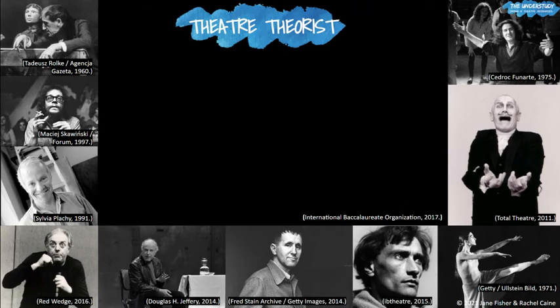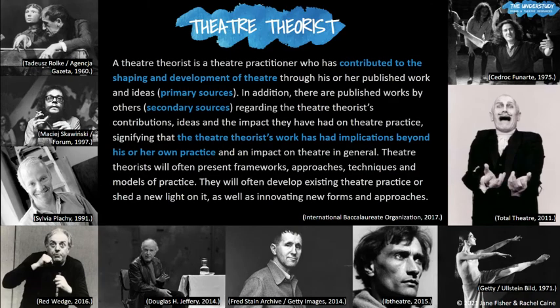Part A asks you to choose a theatre theorist. I have some images on the screen of different theorists — this is not exhaustive, there are many more. A theatre theorist is basically a theatre practitioner who has contributed to shaping and developing theatre either through their published work and ideas, which we call primary sources, or through secondary works published by others about their theories and impact. With Brecht, for example, he wrote plays but also developed epic theatre, and there are published works about the impact he's had. This signifies that the theorist's work has had some impact beyond just their own practice — it's influenced theatre as a whole.